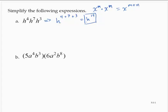Here we have 5a to the fourth b to the third times 6a to the second b to the eighth. This is all a bunch of multiplications here, so we can use some of our properties of numbers to rearrange and regroup things. Specifically,